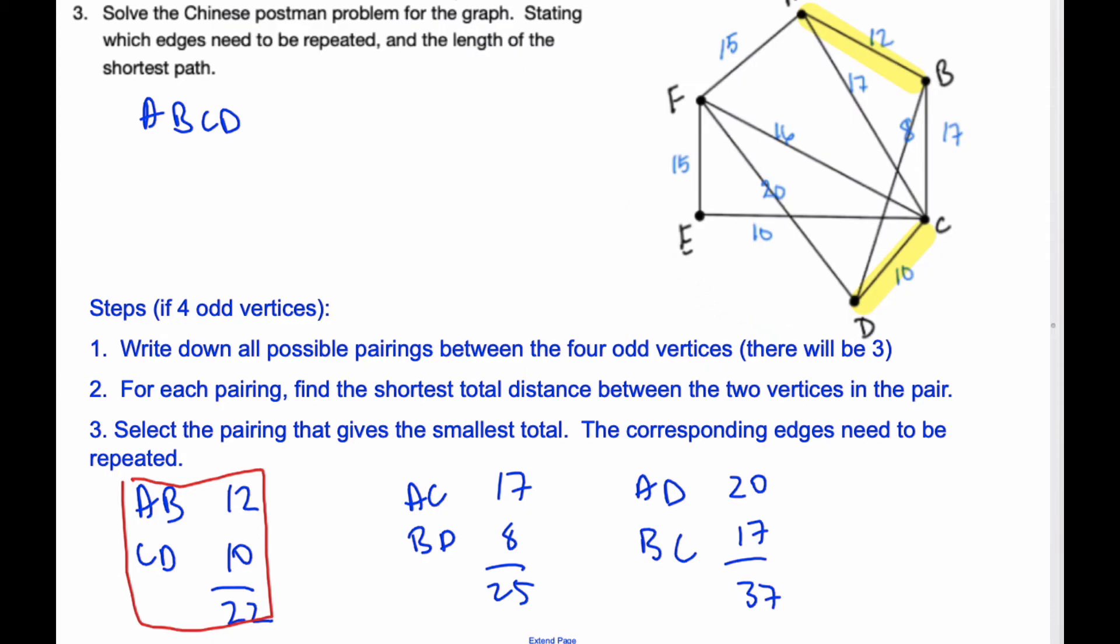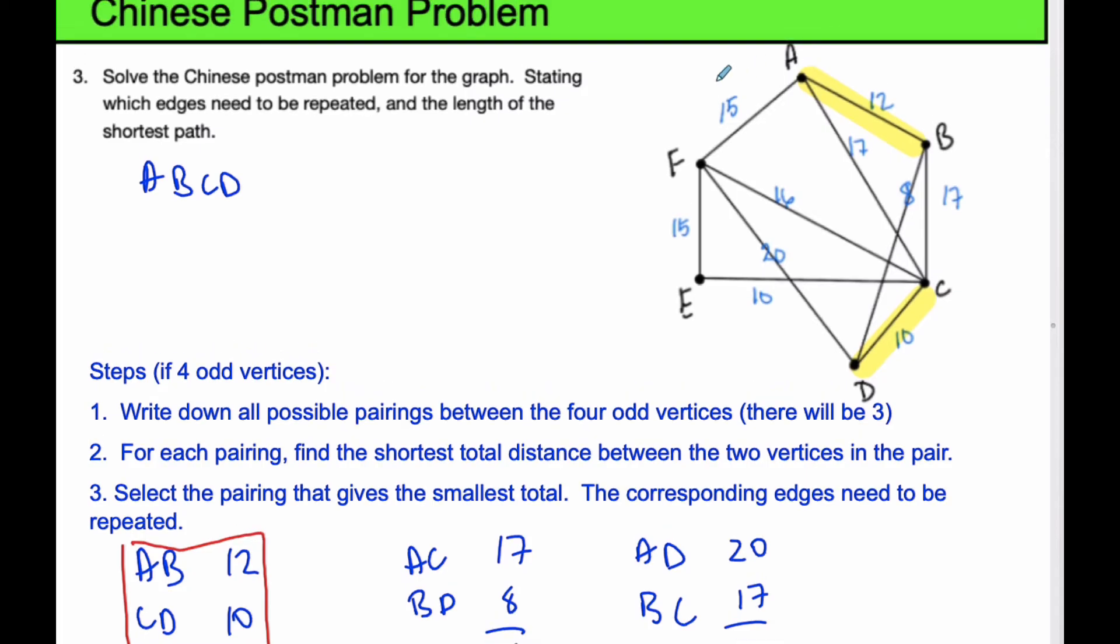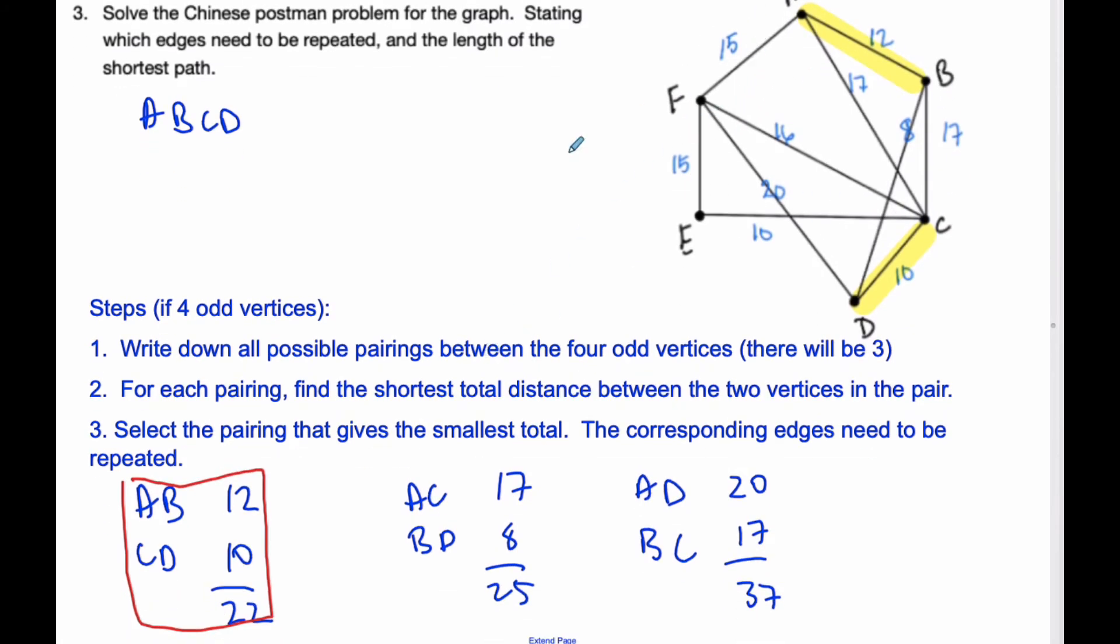So if I want to calculate the total weight of the graph, the total weight of this graph is going to be all of these particular pairings. So the total weight is going to be 15 plus 15, plus 16, 20, and 10, plus 16, plus 20, plus 10, plus 10, plus 17, and 8, plus 17, plus 8, plus 12, plus 17, plus 12, plus 17. And that total, when I throw it in my calculator, I end up with 140.